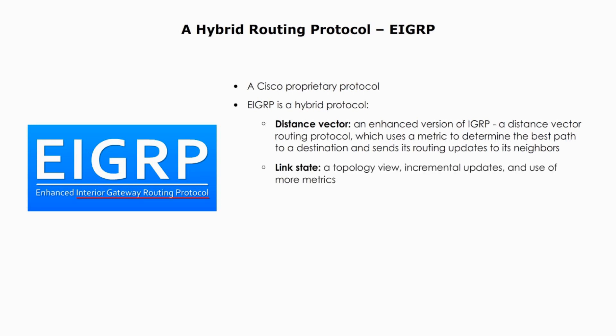It's also a link state routing protocol because each router has a topology view of the network, only sends incremental changes to its neighbors, and uses more metrics like bandwidth, latency, and reliability to determine the best route between any two devices. EIGRP is known for its fast convergence and low bandwidth usage, and is commonly used in enterprise networks.